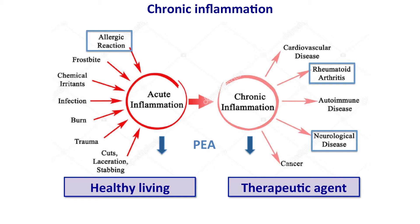Chronic inflammation is at the basis of almost every important disorder that we have: cardiovascular disease, rheumatoid arthritis, autoimmune disease, Alzheimer's disease, Parkinson's disease, and cancer. These are huge conditions. Time Magazine once called chronic inflammation the silent killer.